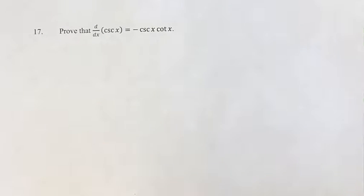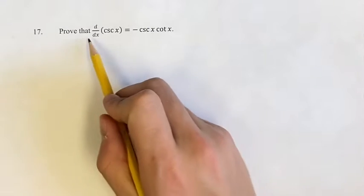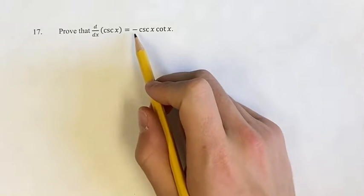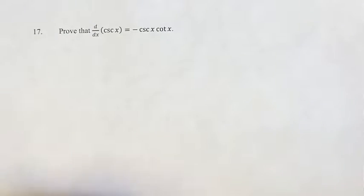Hello and welcome back to another video. This problem, we're asked to prove that the derivative of cosecant x is equal to negative cosecant x cotangent x.